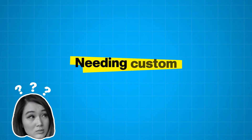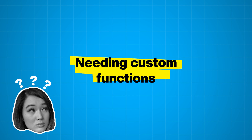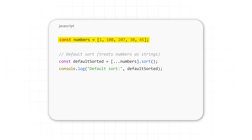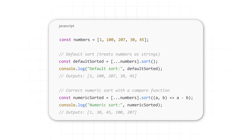JavaScript also requires custom functions for quite simple operations that other languages have natively. Take JavaScript's sort. If you have an array of numbers like 1, 100, 207, 30, 45 and use array.sort, you might expect it to sort numerically, but by default sort treats elements as strings. So instead of getting 1, 30, 45, 100, 207, you'll get 1, 100, 207, 30, 45. In order to get a correct numeric sort, you have to provide a custom compare function.